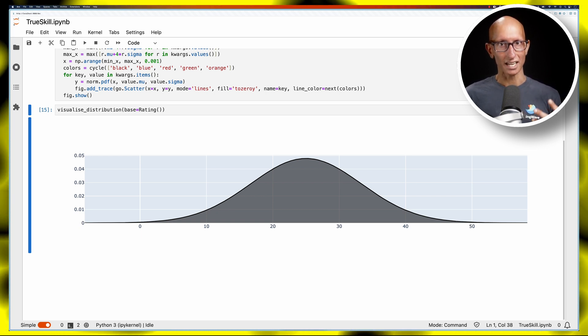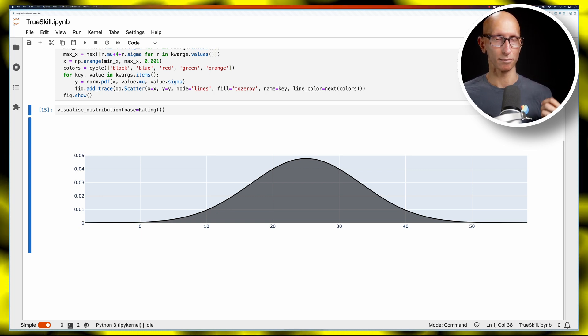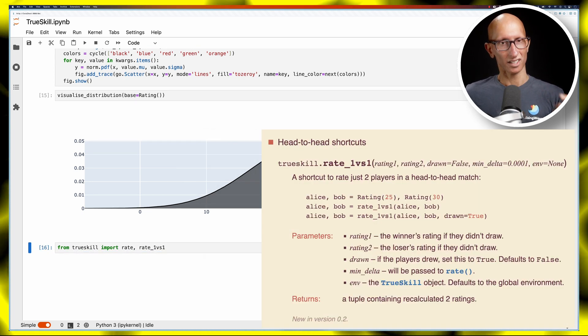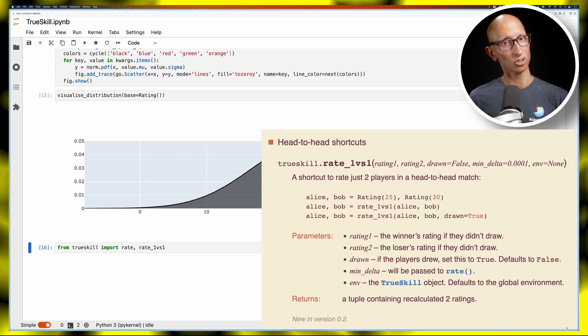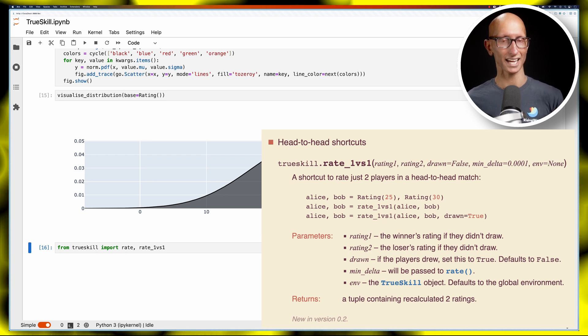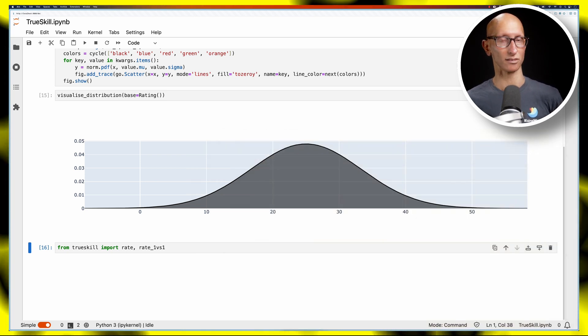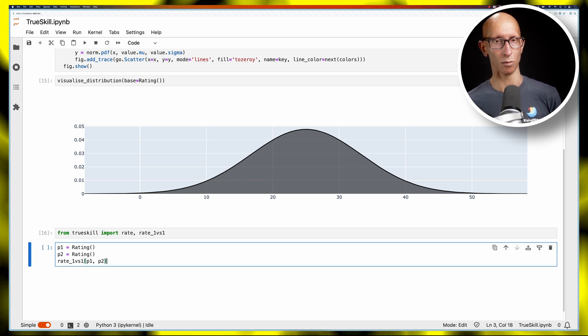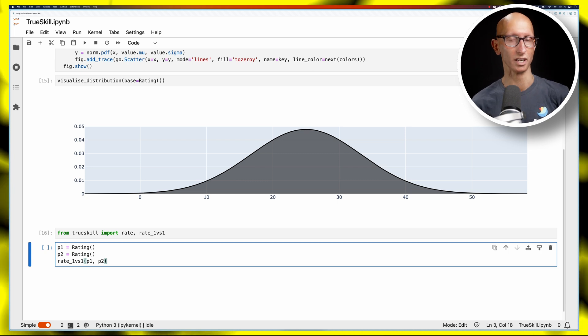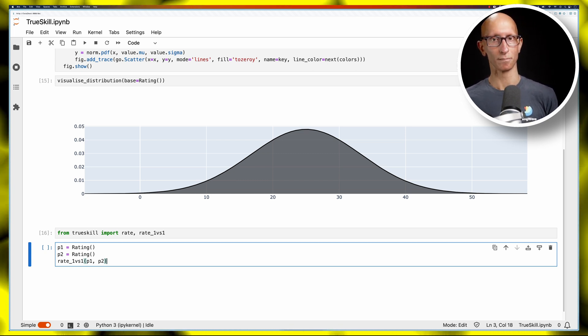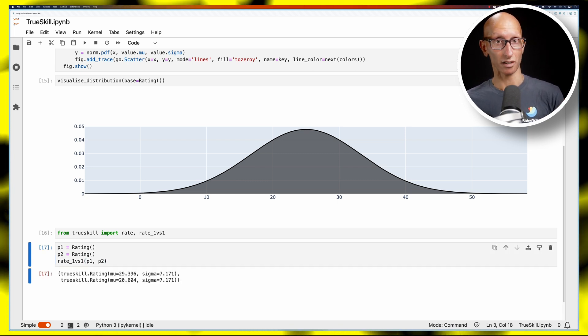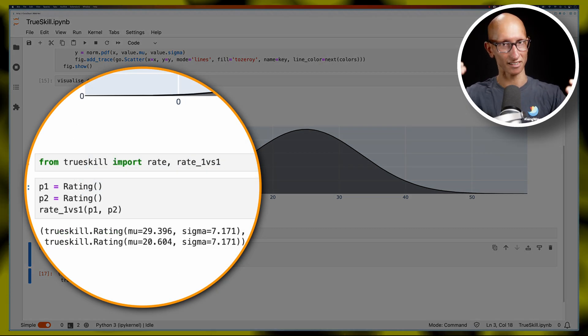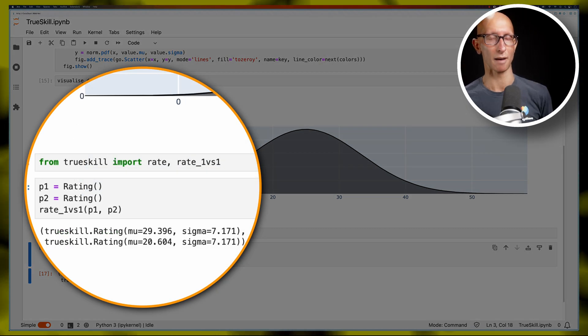Next thing we're going to do is bring in a couple of functions: rate and rate_one_versus_one. Now we're going to start by using rate_one_versus_one, so this is a shortcut function to rate just two players in a head-to-head match. So let's do that, we're going to create p1 and p2 and then we're going to call the rate function for p1 and p2 and what we're saying is the one on the left, i.e. p1, won this match. And so if we run it and we can see the result, you can see p1's Mu has gone up, p2's has gone down, and their Sigmas have both come down so we're a little bit more certain about their rating.